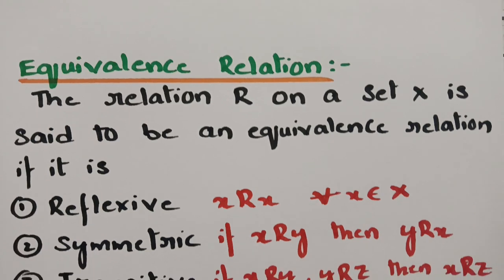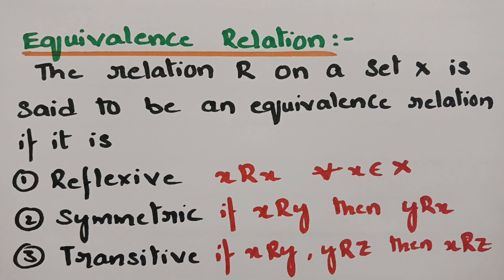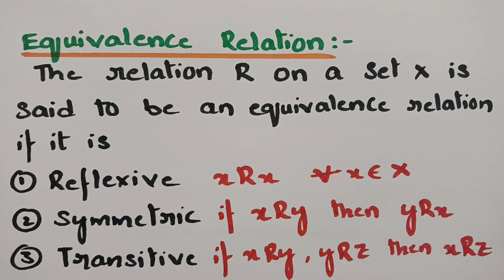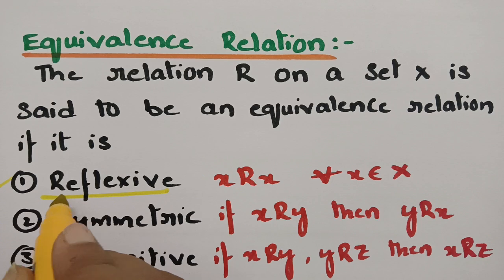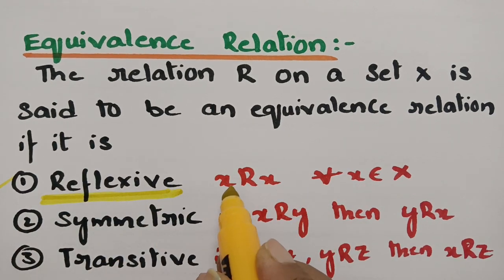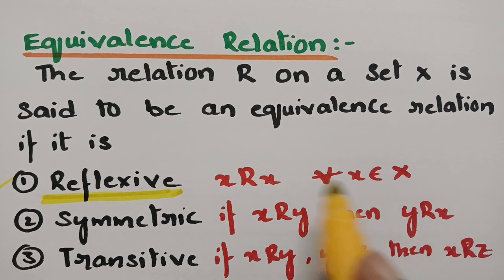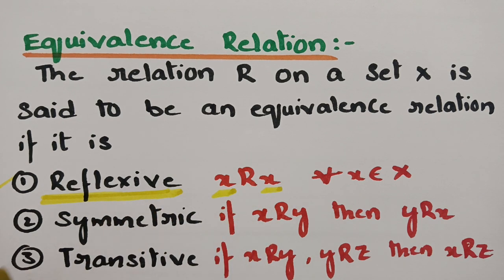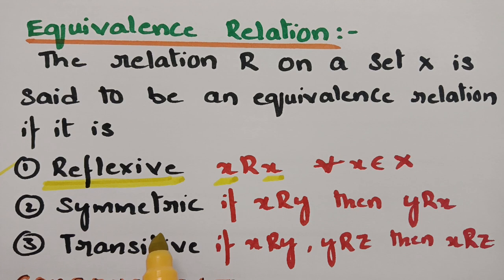A relation R on a set X is said to be an equivalence relation if it satisfies three properties. The first is reflexive: if x is related to x for every x belonging to X, then we say the relation is reflexive. I have already done a video on equivalence relations — please have a look at those; it is already uploaded in the playlist.